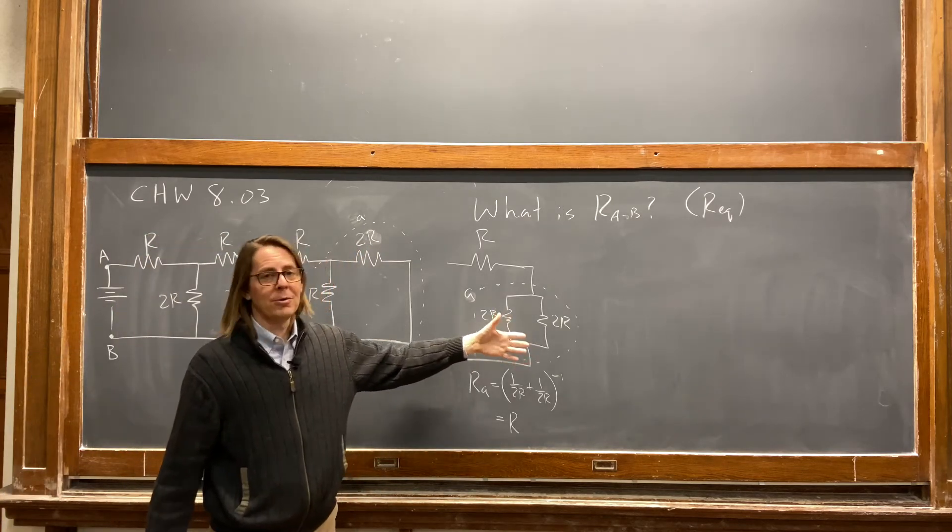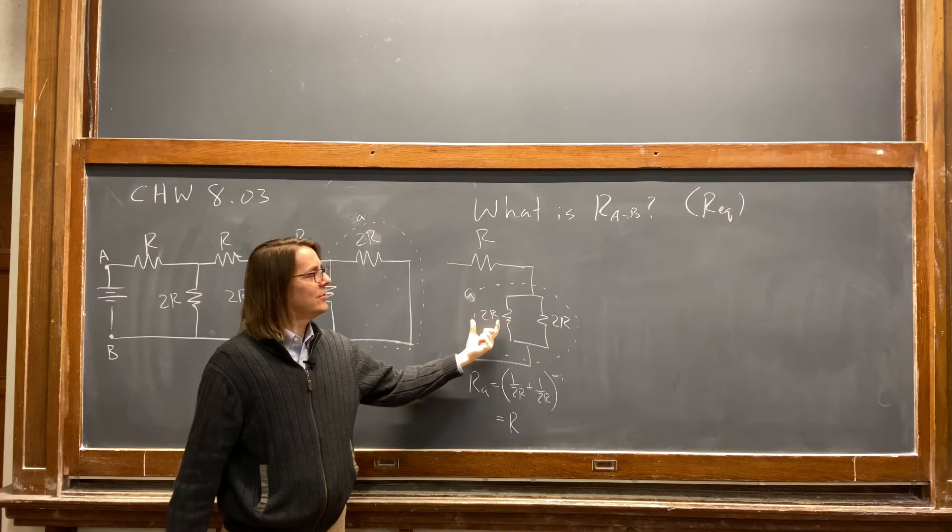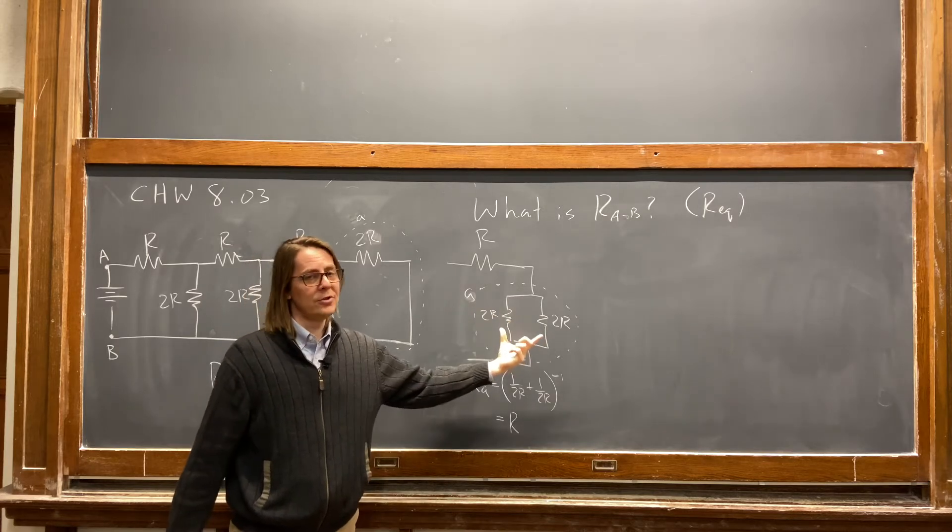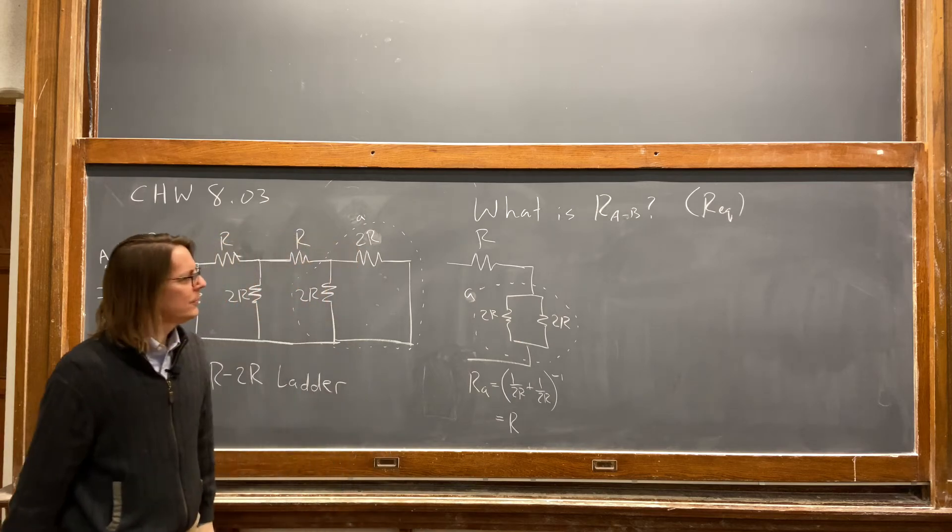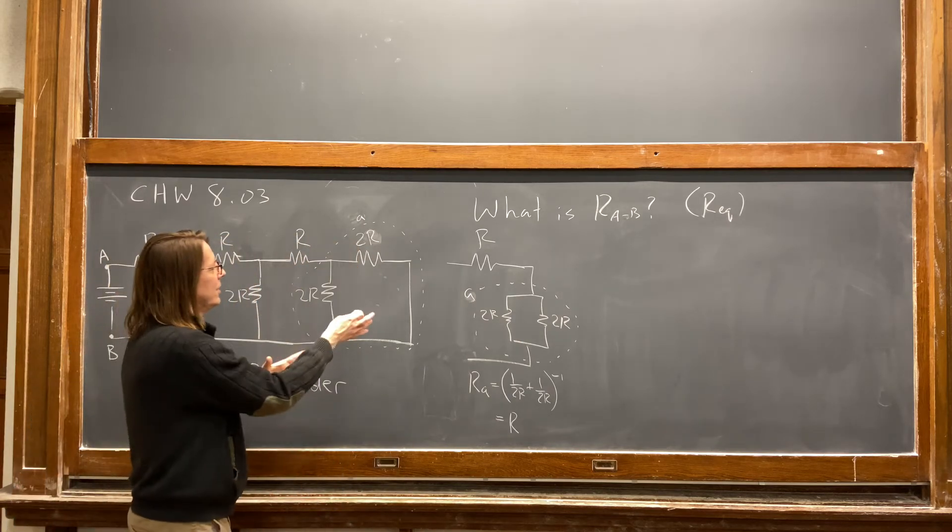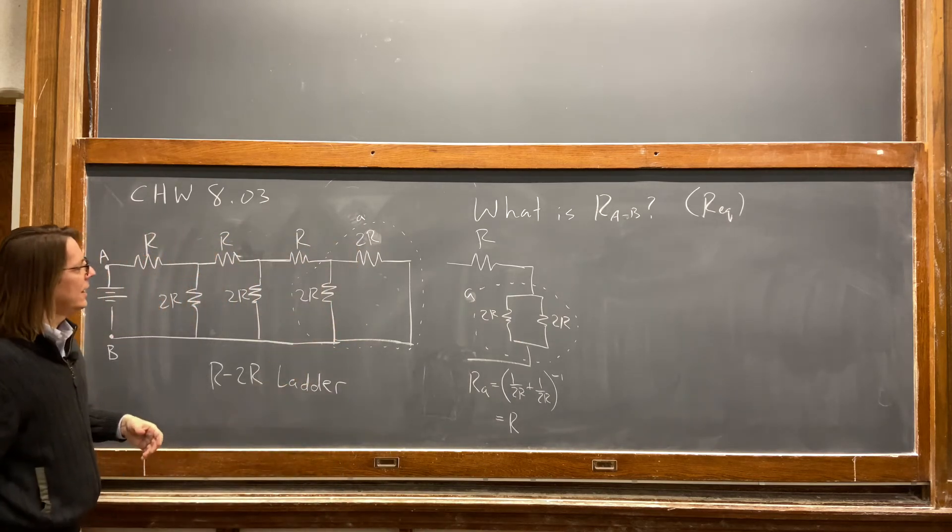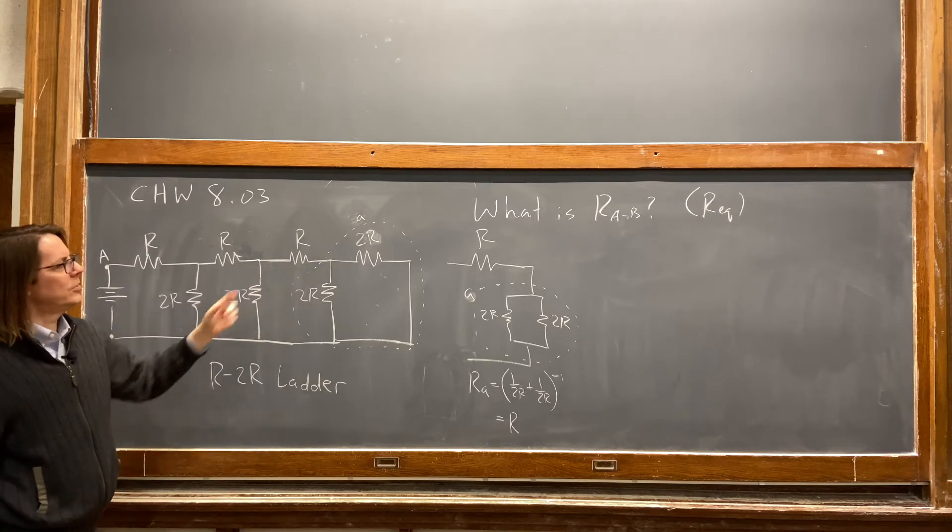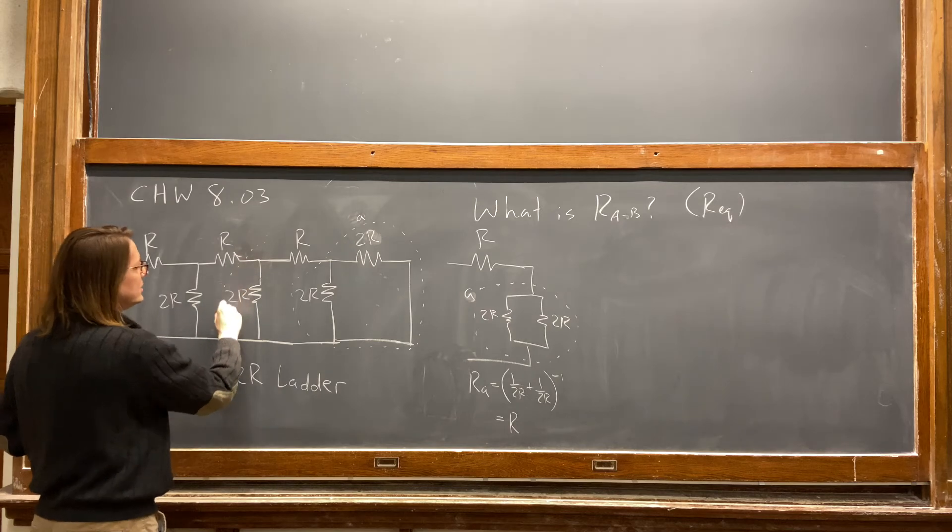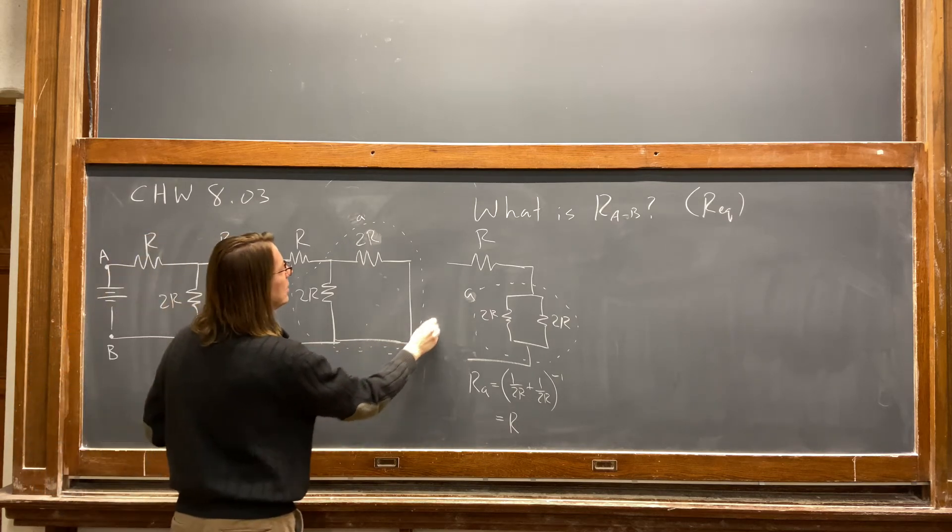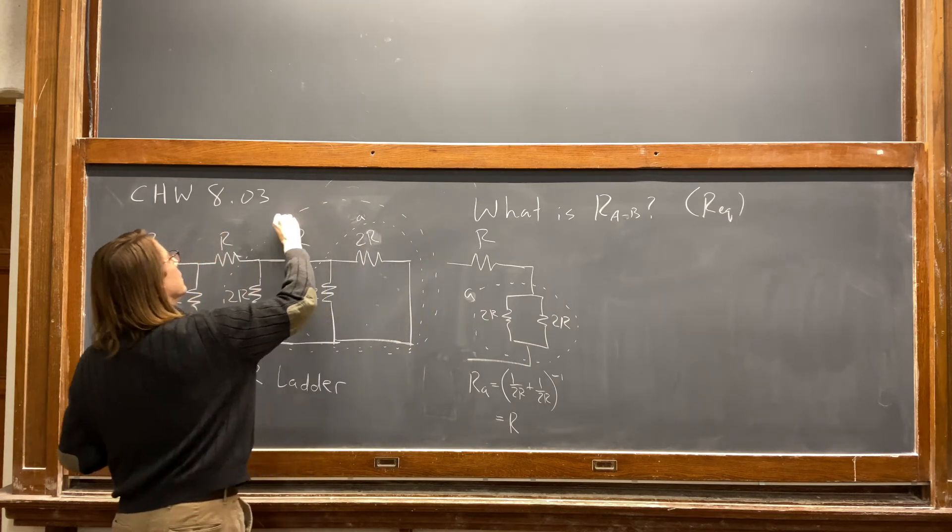Which matches what we said in other problems, if you have a resistance of 2R, whenever you add something in parallel, it always brings down the total resistance. So it dropped it from 2R down to R. So you say, okay, this whole thing is just an R, and it's in series with that R. So we could then say, well, then what does branch B look like? Okay.